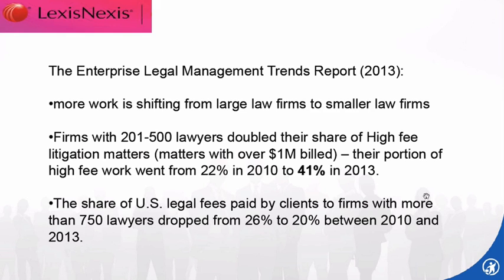LexisNexis put out the Enterprise Legal Management Trends Report from 2013 showing that more work is shifting from large law firms down to smaller law firms, in part because technology is making it more possible for smaller firm attorneys to work on matters. Firms with 201 to 500 lawyers actually doubled their share of high-fee litigation matters — matters over $1 million billed — from 22% in 2010 to 41% in 2013. The share of U.S. legal fees paid to firms with more than 750 lawyers dropped from 26% to 20% between 2010 and 2013.